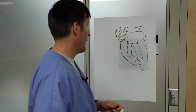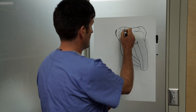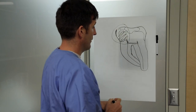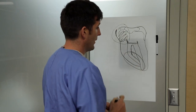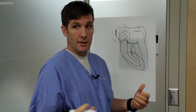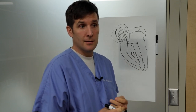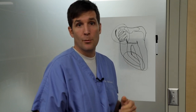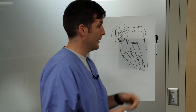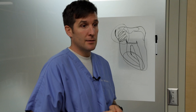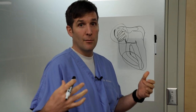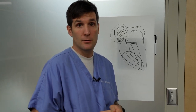Here we have tooth number 18. We can appreciate a few things: the large carious lesion right here, and the apical curvature. Also, as tooth number 18, it's a terminal tooth in the arch, so we know that this tooth is going to be under a lot of occlusal loading through the lifespan. We have to take that into consideration so that we can maximize the amount of remaining tooth structure.